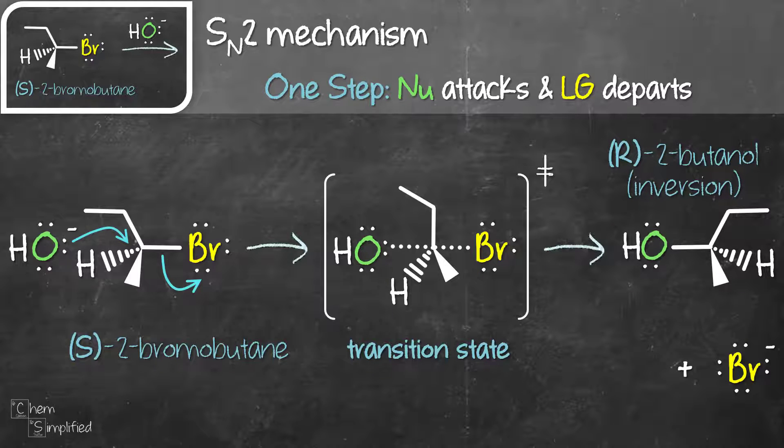As you can see, the stereochemistry is completely inverted. We started with S-2-bromobutane and then we ended with R-2-butanol. Our S stereocenter got inverted to R and that's what is meant by inversion. This is the signature of SN2 mechanism.